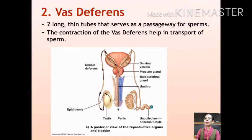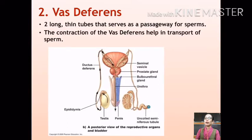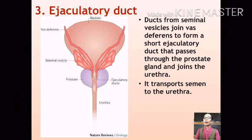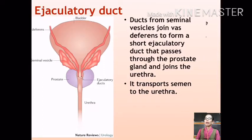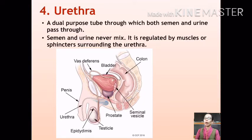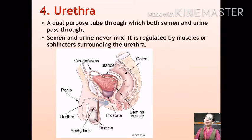The ducts from the seminal vesicles join with the vas deferens to form the short right and left ejaculatory ducts. These ejaculatory ducts transport the semen to the urethra, and semen containing sperms is fully ejaculated out of the male body through the urethra by the activity of its sphincter muscles. This process of release of semen from the male body is called ejaculation.